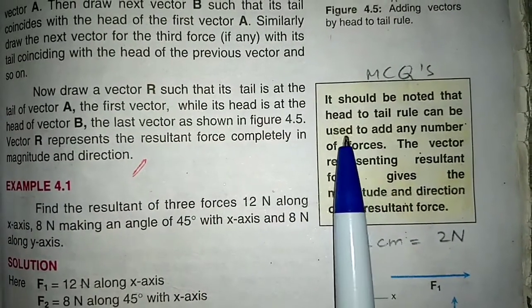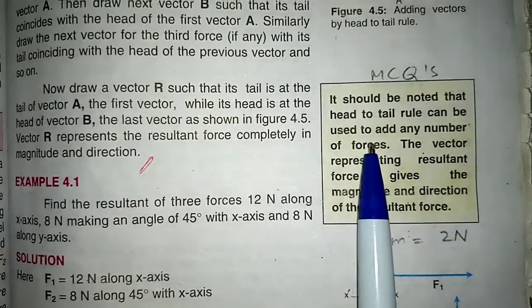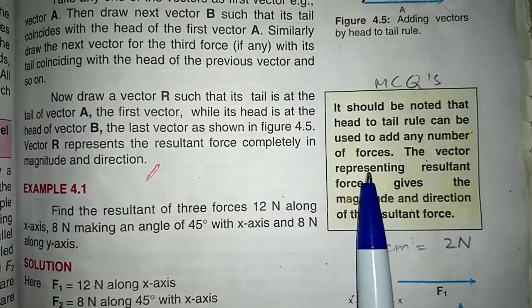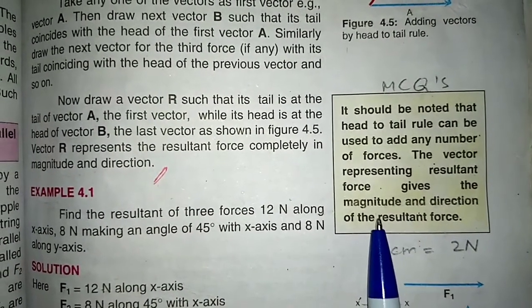It should be noted that head to tail rule can be used to add any number of forces. The vector representing resultant force gives the magnitude and direction of the resultant force.